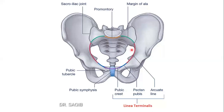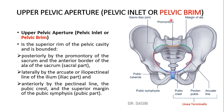This is the pelvic inlet, or upper pelvic aperture, also called pelvic brim. It is bounded posteriorly by the promontory of the sacrum and the anterior border of the ala of the sacrum, and laterally by the arcuate or iliopectineal line of the ileum. Anteriorly it is bounded by the pectineal line, the pubic crest, and the superior margin of the pubic symphysis.